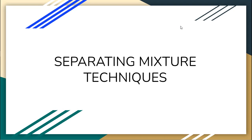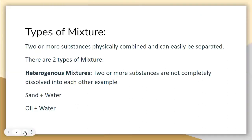First of all, what is a mixture? Two or more substances that are physically held together — no chemical reaction is taking place — and you can easily separate them using physical techniques. Such a substance is called a mixture. Examples include sand and water, iron particles and sand, salt and water, and sugar and water.